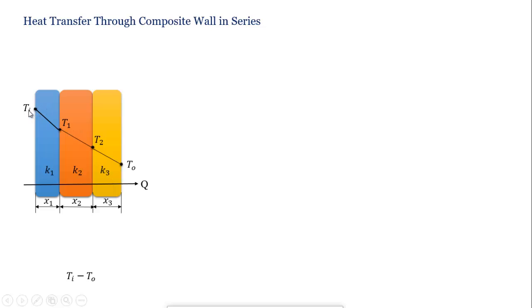The temperature decreases from Ti to T1 through the first wall, T1 to T2 in the second wall, and T2 to To in the third wall.